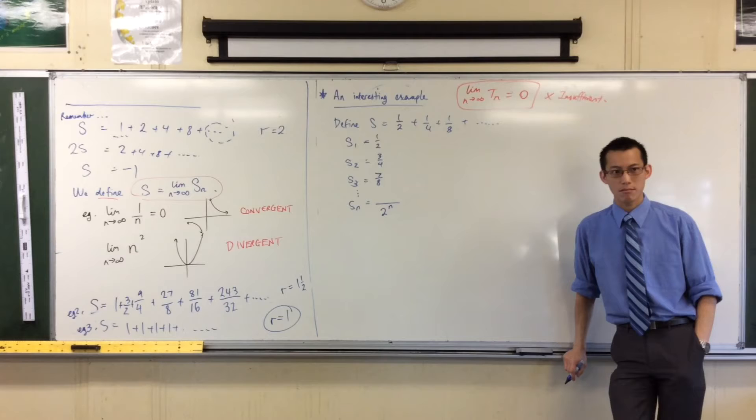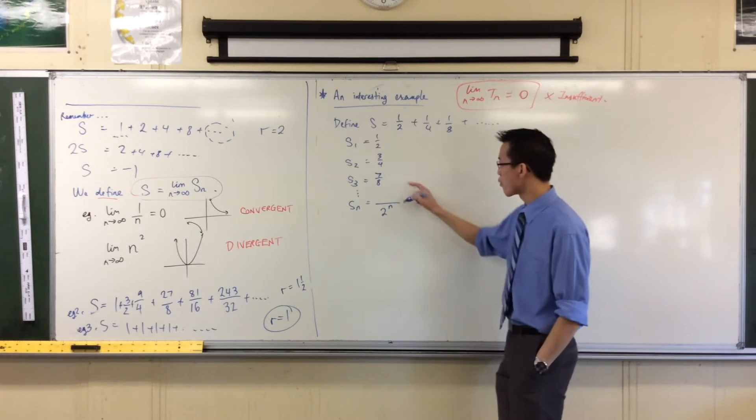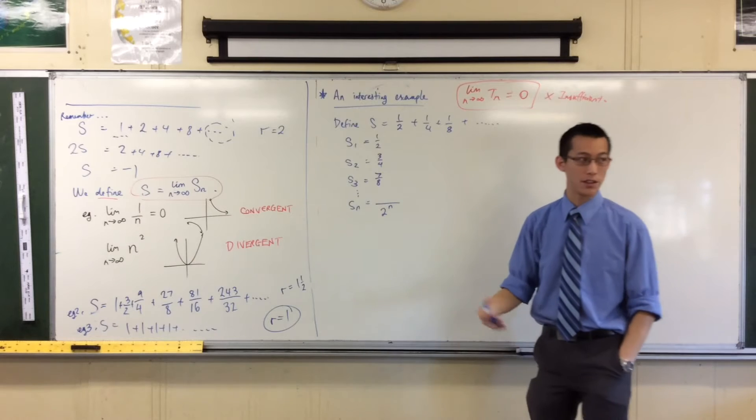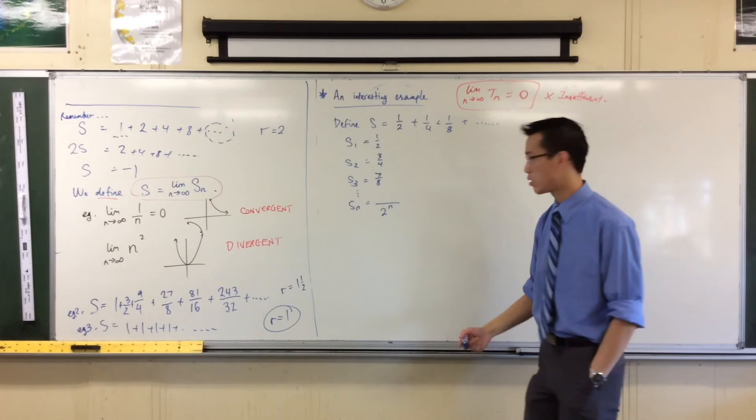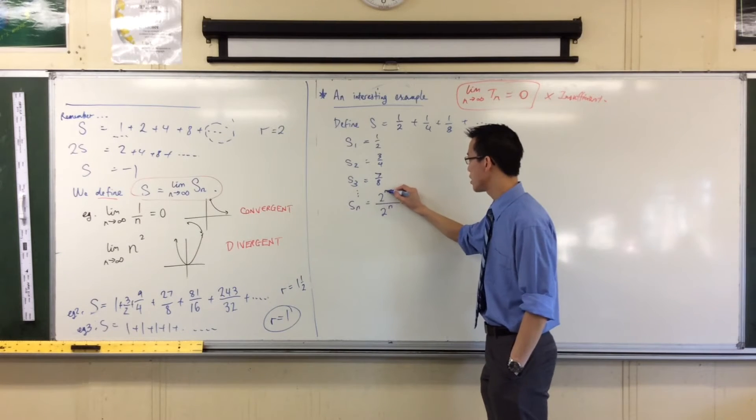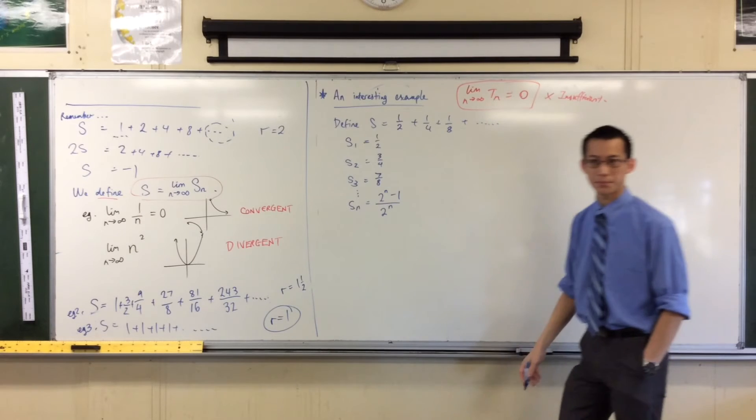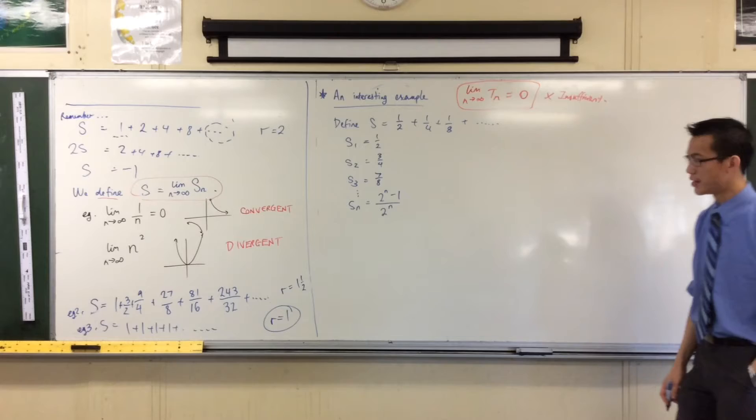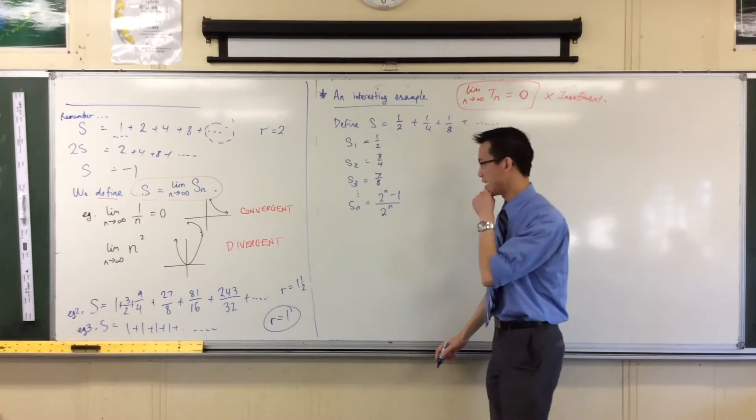So, on the denominator, what do I have? Two to the power of n. Are you content with that? Yes, on the numerator, I always have exactly one less than that, right? You can go to the next one, it'll be 15 on 16, and 31 on 32, and so on. So I've got two to the n minus one. Are you okay with that? Alright, now I want to think here, by definition, right, by definition,